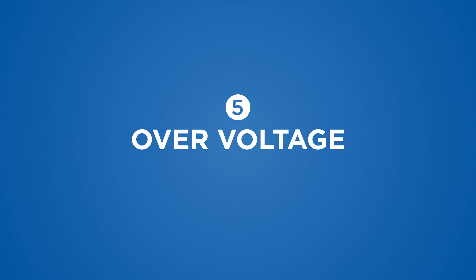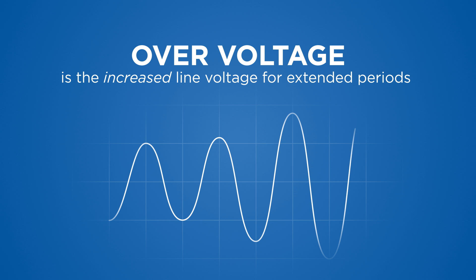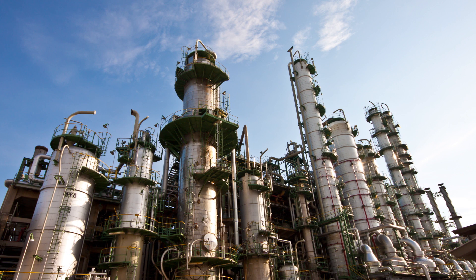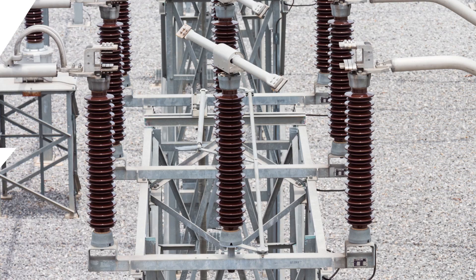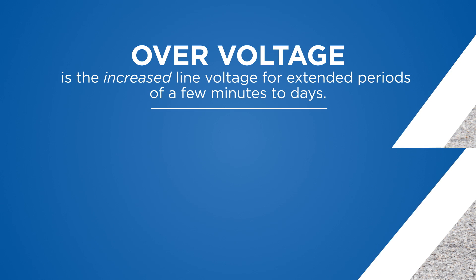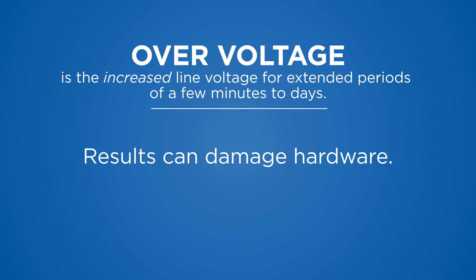Over voltage is increased line voltage for extended periods of a few minutes to a few days. It is triggered by a rapid reduction in power loads, heavy equipment being turned off, or by utility switching, and can potentially damage hardware. For protection against these five power problems, a single-phase line interactive UPS for more critical applications is the best solution.